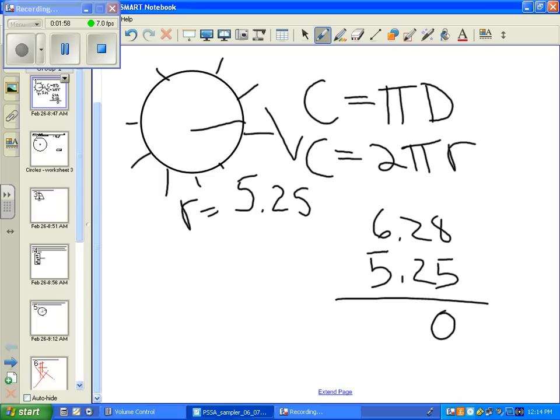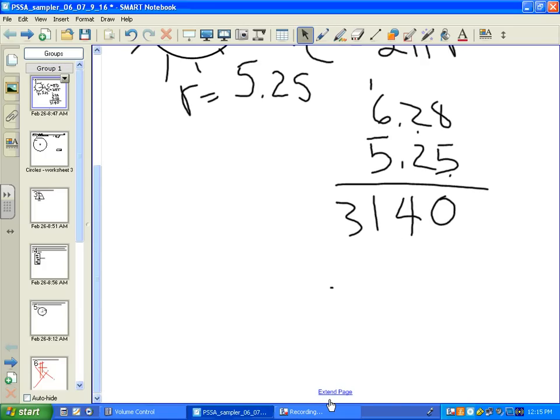Okay, 5 times 8 is 40. 5 times 2 is 10 plus 4 is 14. And 5 times 6 is 30, 31. Okay, we have our units done. We're moving on to our tens. 2 times 8 is 16. Write the 6, carry the 1. 2 times 2 is 4 and 1 is 5. 2 times 6 is 12. So our tens done.